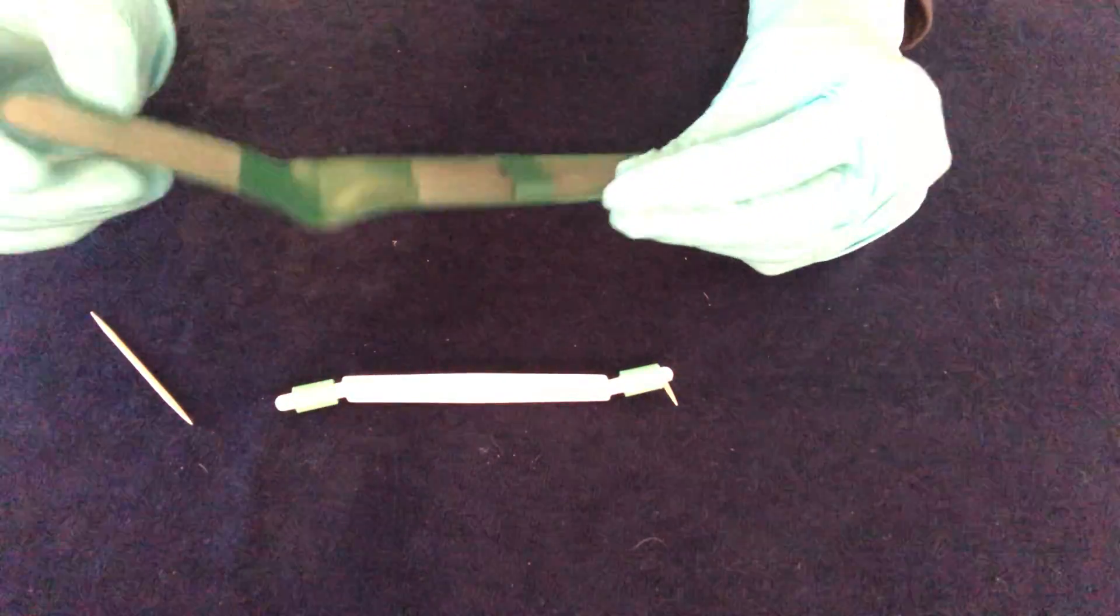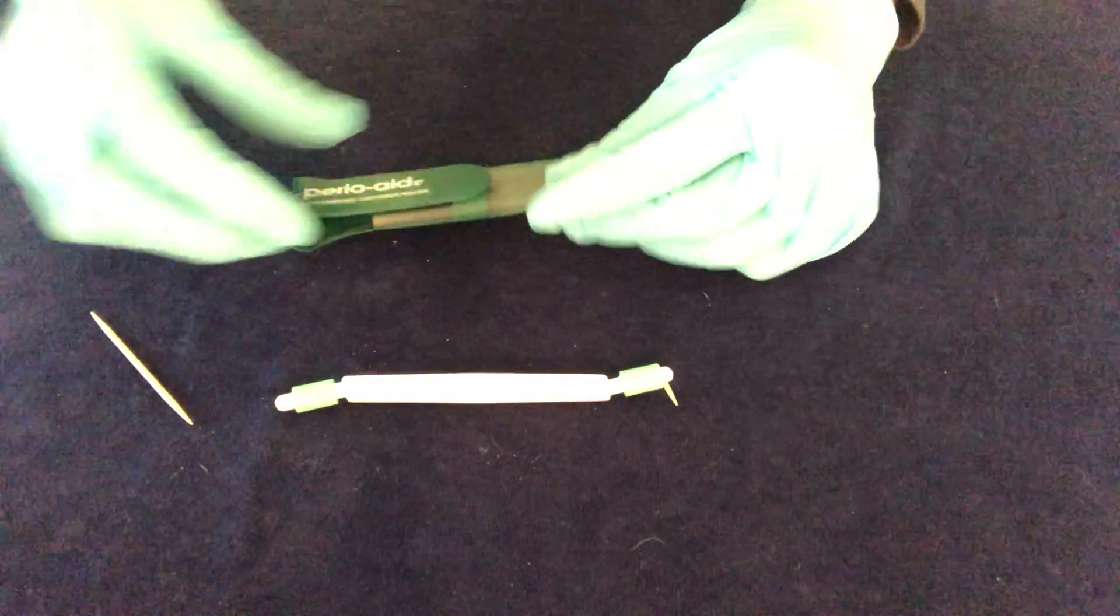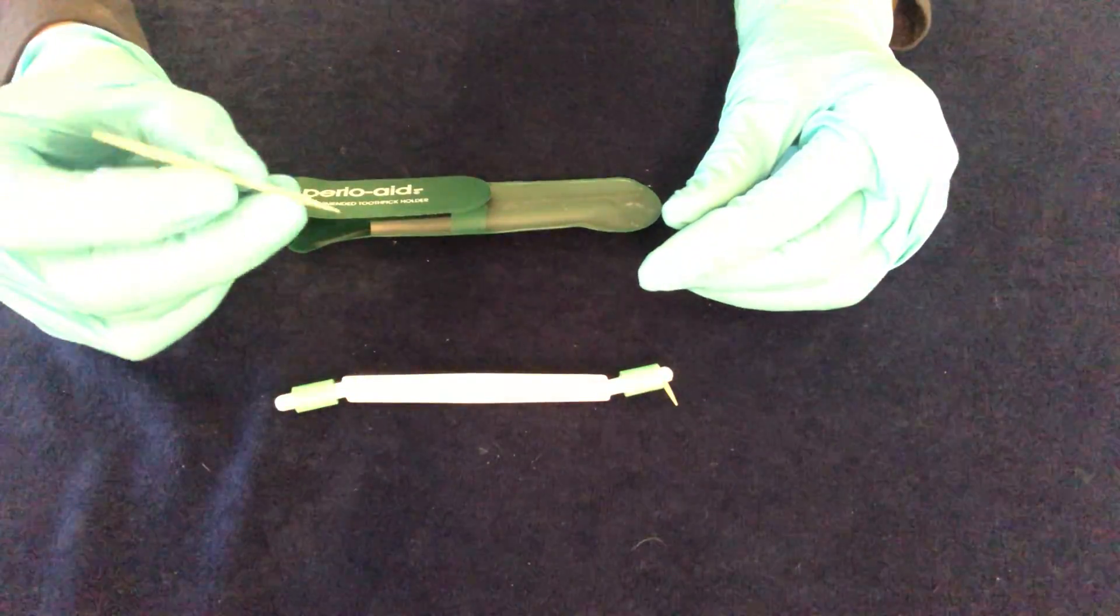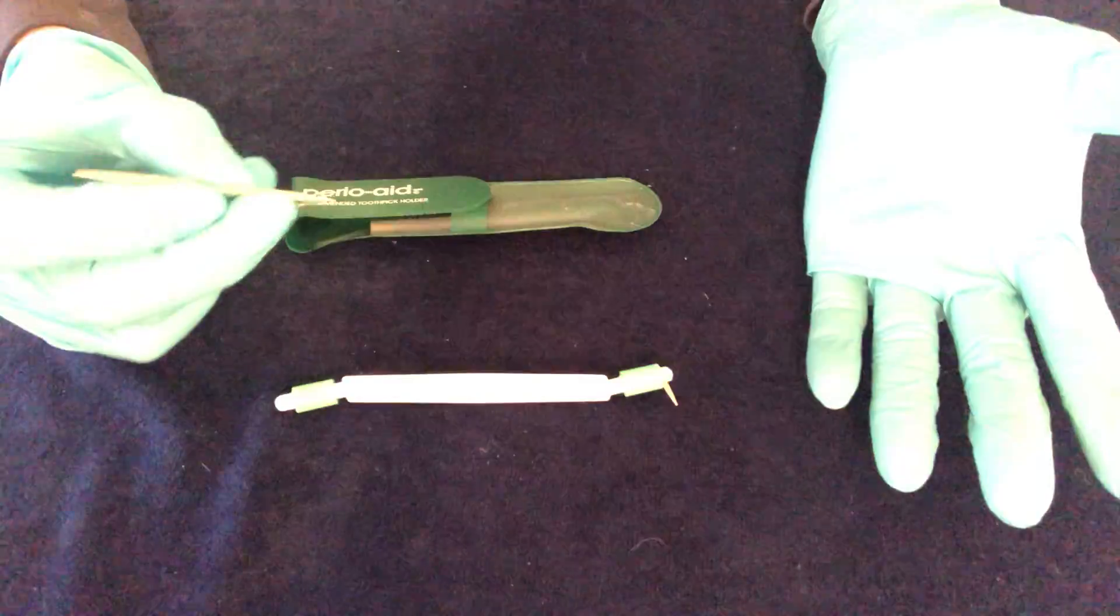They'll send you some toothpicks. What you might find are kind of flimsy. You want to find hard birchwood toothpicks. The ones from restaurants in cellophane are pretty good.